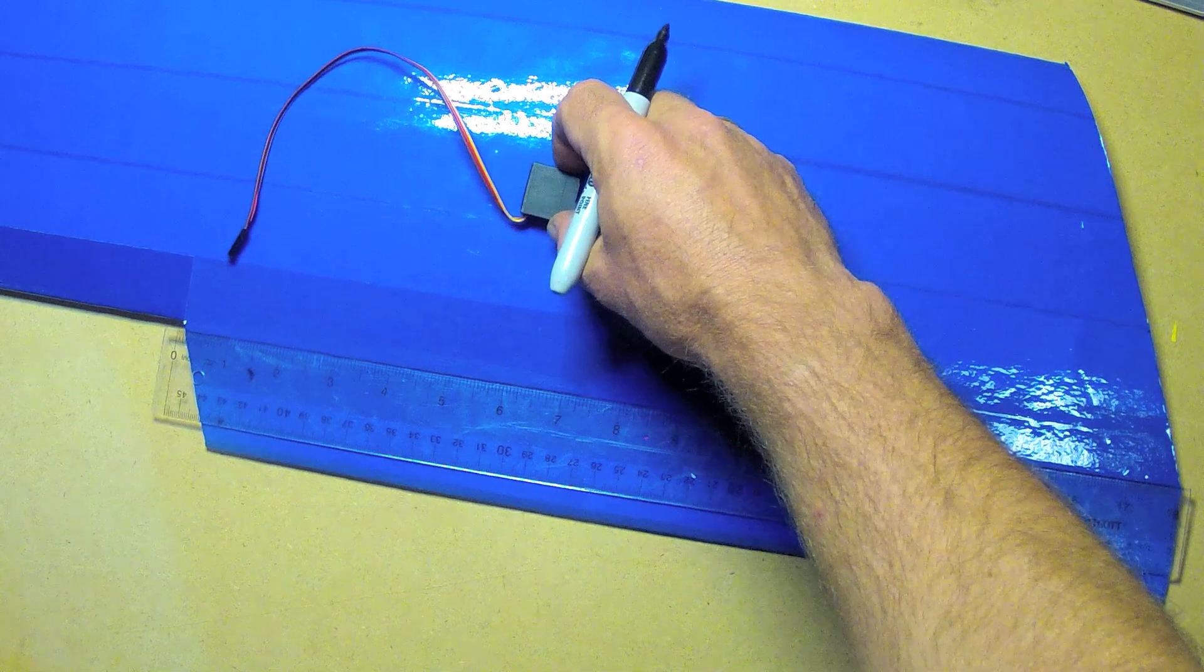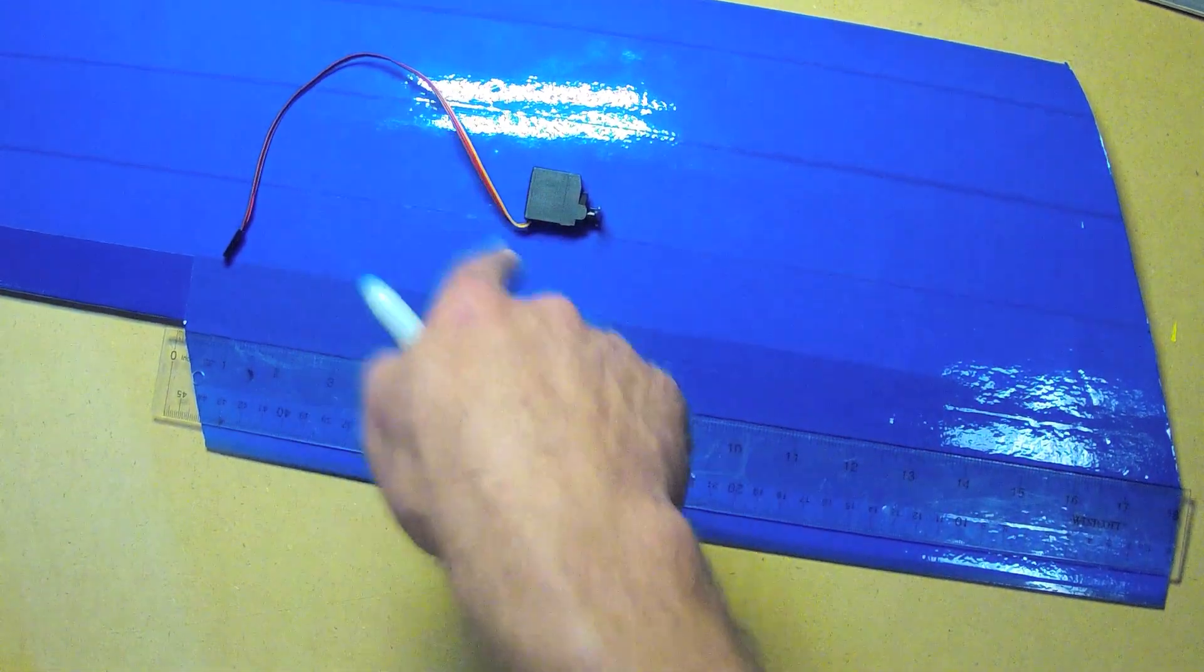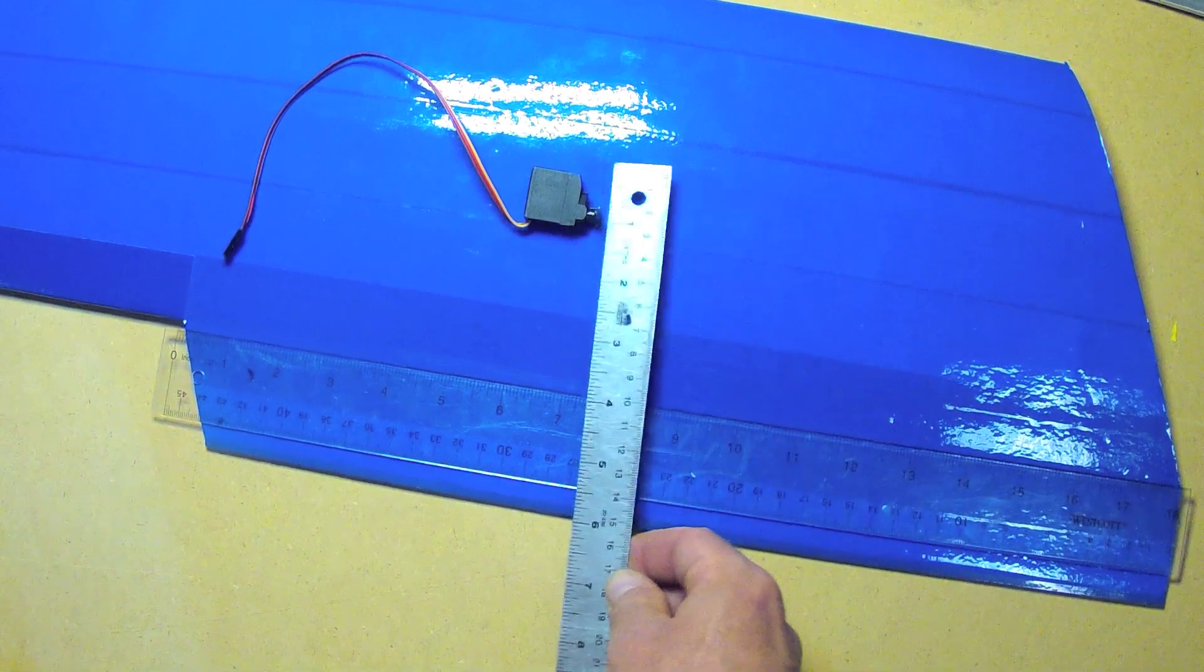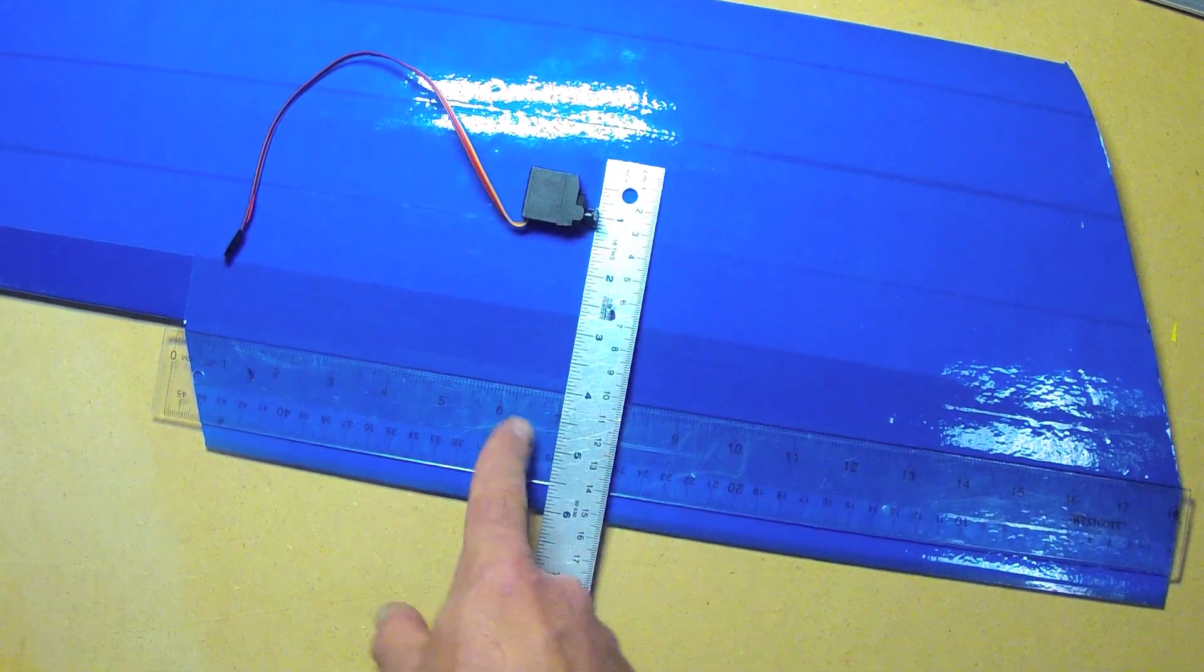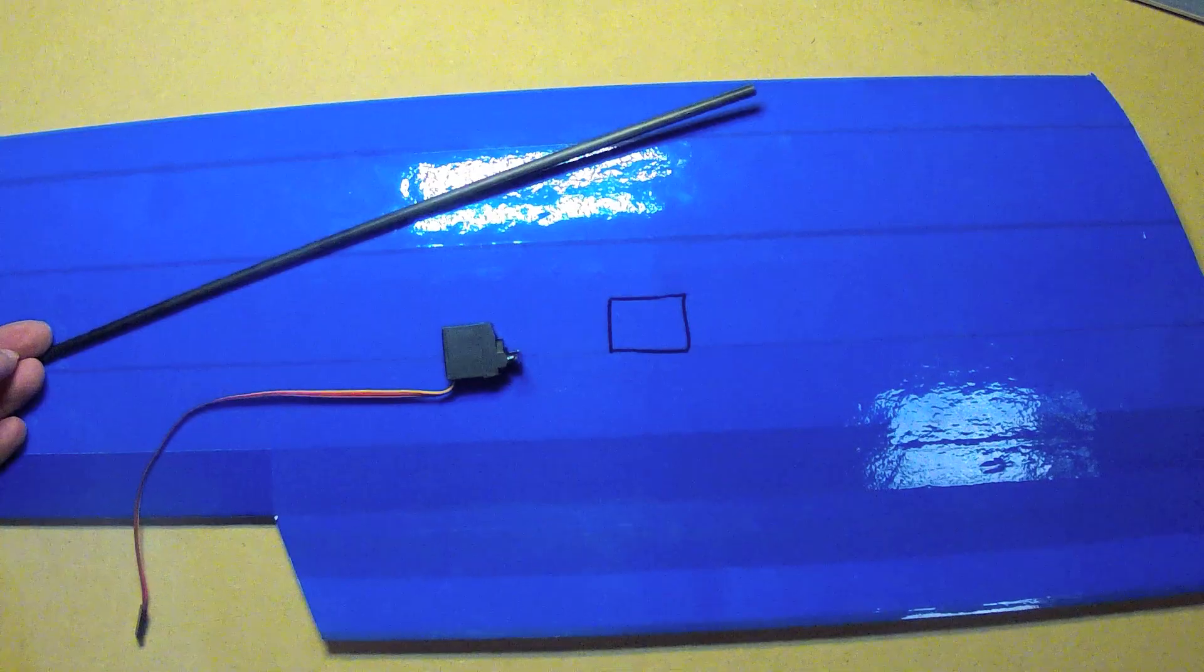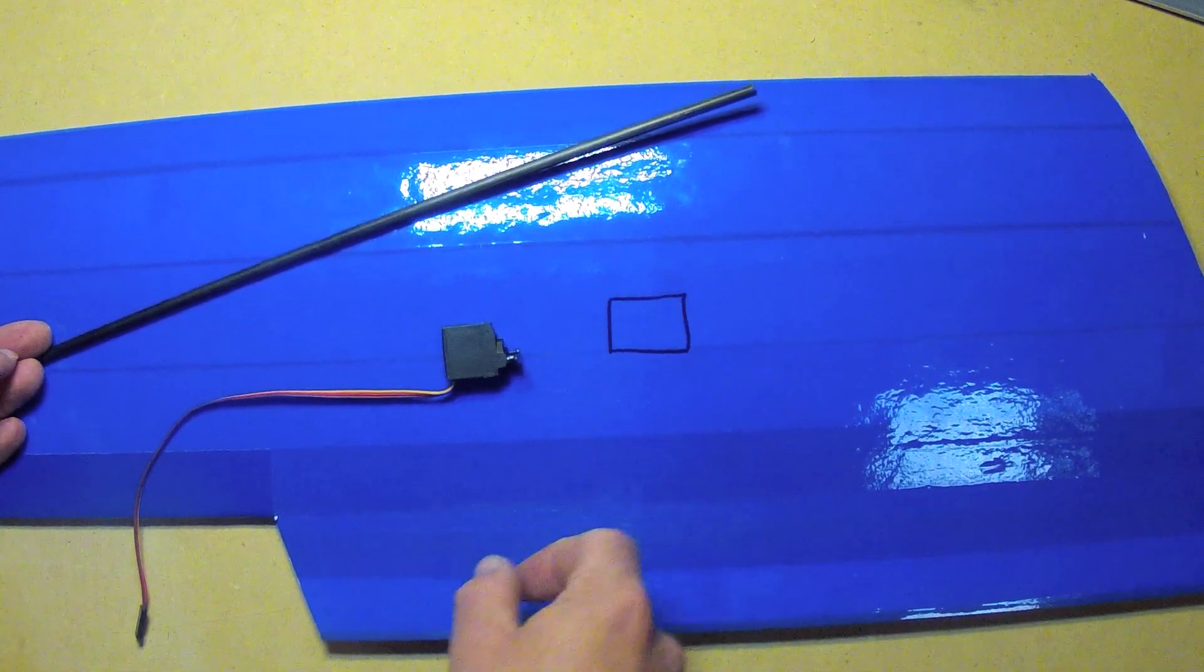I will trace a square in the top surface of the wing through which the servo will go and the actual push rod itself will come to 7 inches which is in that center third of the Elevon itself. Here is where I've traced out the hole for my servo emplacement.